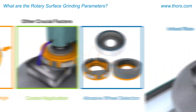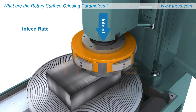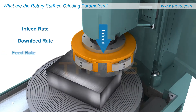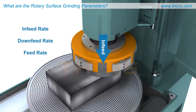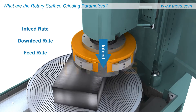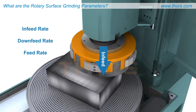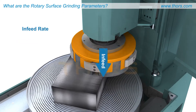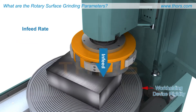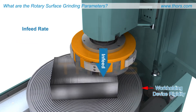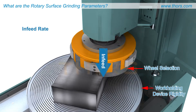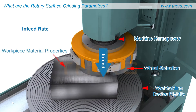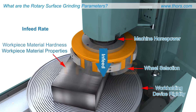The infeed rate, sometimes referred to as the downfeed rate or just the feed rate, is the speed at which the grinding wheel moves in the z-axis into the workpiece. Variables that affect infeed rates include the rigidity of the work holding device, wheel selection, the horsepower of the machine, material properties, and material hardness.